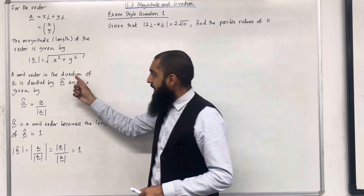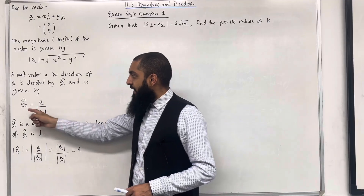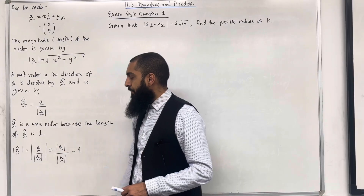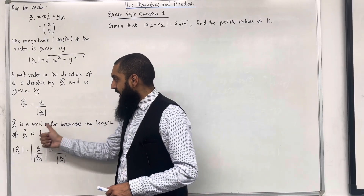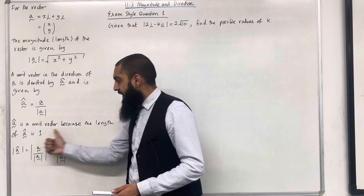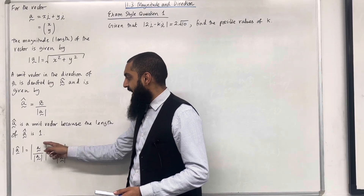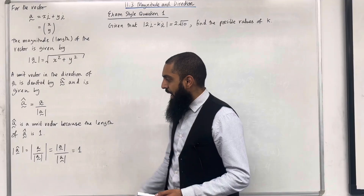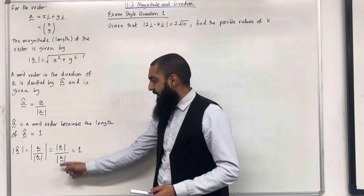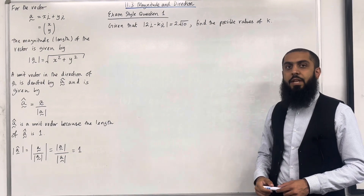A unit vector in the direction of vector A is denoted by â and is given by â = A divided by |A|. The vector â is a unit vector because its length is 1. Proof: |â| = |A| / |A| = 1. These are the key facts of 11.3 magnitude and direction.